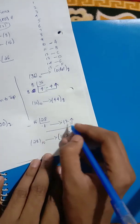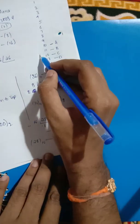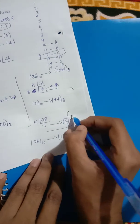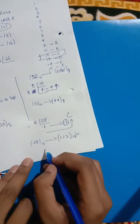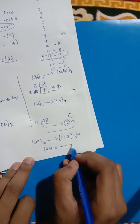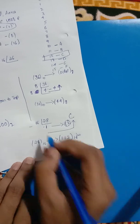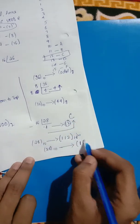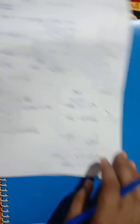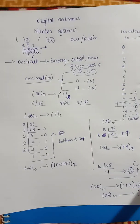Here the remainder is 12, which is written as C in hexadecimal. So the number 28 in decimal converted to hexadecimal gives 1 and C, written as 1C. This is the decimal to any other number system conversion process.